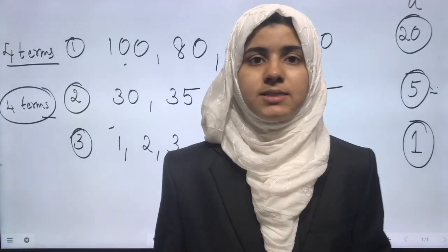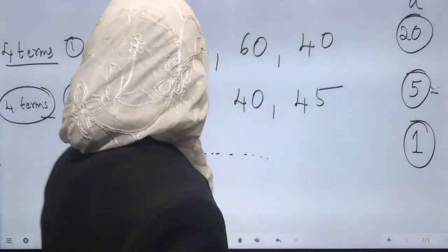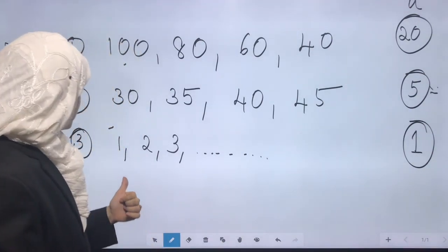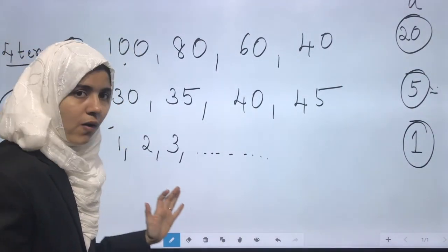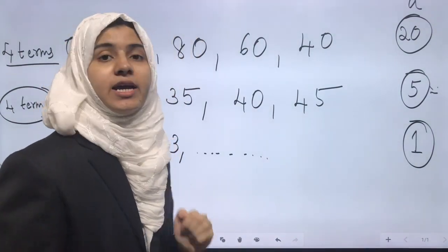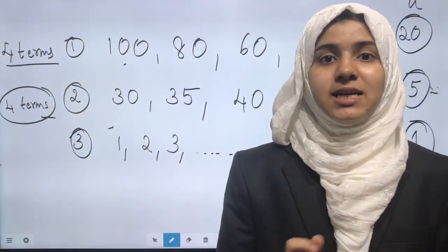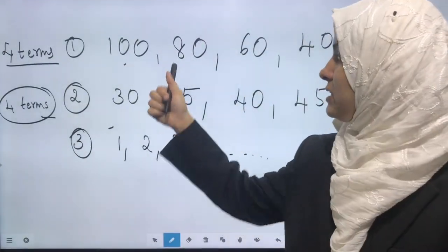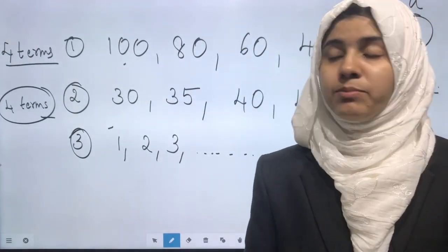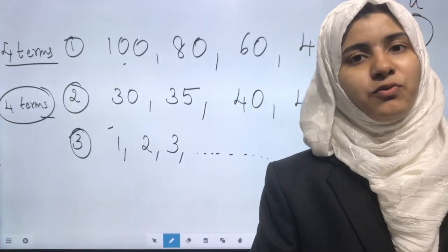And in the third example, how many terms are there? It's a list of natural numbers, so first term is one, second term is two, third term is three, and it goes on. So there are infinite terms, hence it's an infinite AP. Clear? Whereas the first two APs have finite number of terms, hence they are finite APs.